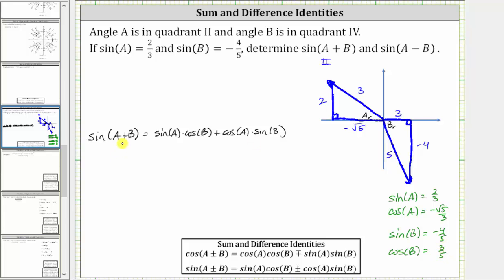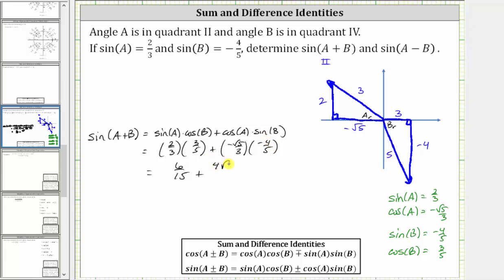Sine of the quantity A plus B equals sine A times cosine B plus cosine A times sine B, which is two-thirds times three-fifths, plus negative square root five over three times negative four-fifths. Simplifying, we have six-fifteenths, and negative times negative is positive, so this is plus four square root five over fifteen. This gives us the quantity six plus four square root five, all divided by 15.